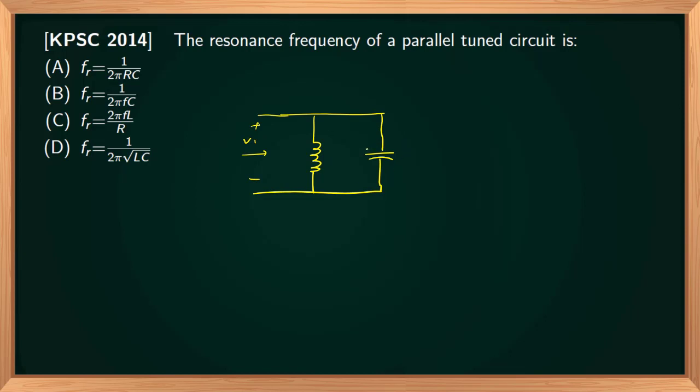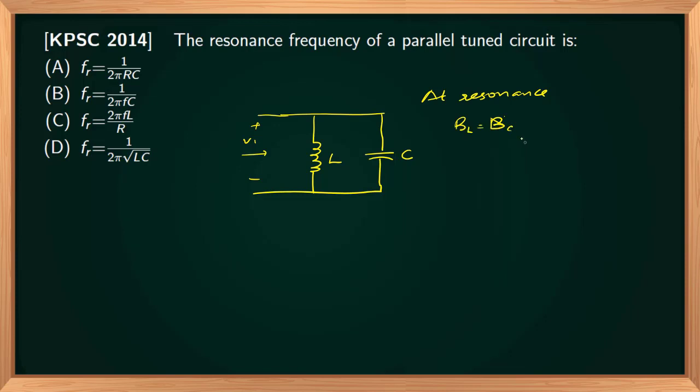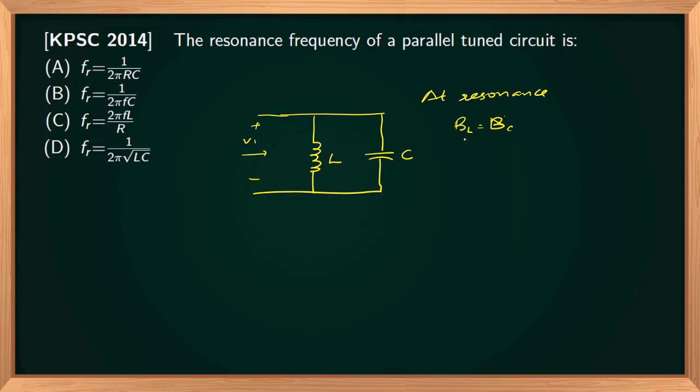If inductor value is L and capacitor value is C, at resonance inductive susceptance will be equal to capacitive susceptance BC. BL equals 1 by 2 pi FL. Susceptance value is inverse of reactance value. BC will be equal to 2 pi FC.